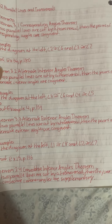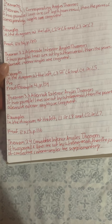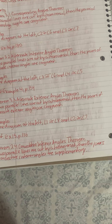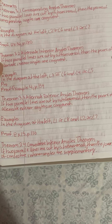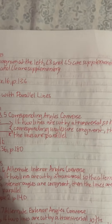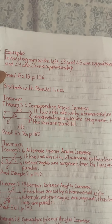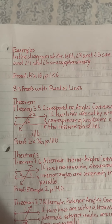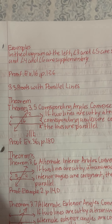Theorem 3.4, Consecutive Interior Angles Theorem: If two parallel lines are cut by a transversal, then the pairs of consecutive interior angles are supplementary. Examples: In the diagram at the left, angle 3 and angle 5 are supplementary, and angle 4 and angle 6 are supplementary. Proof. Example: 16P136.